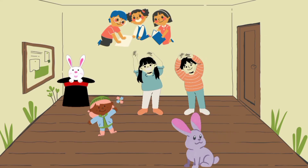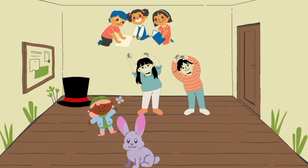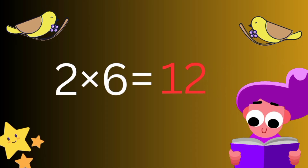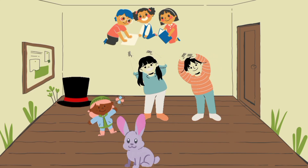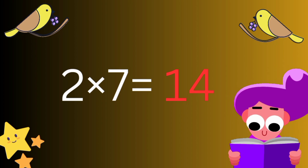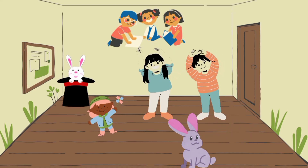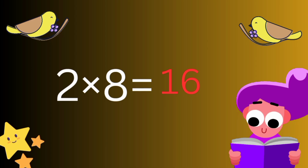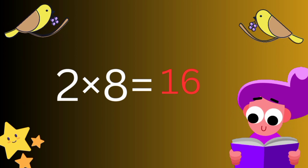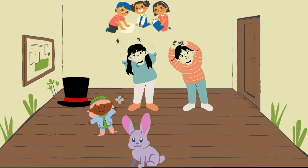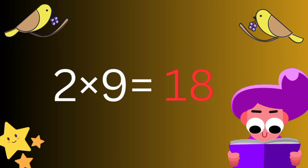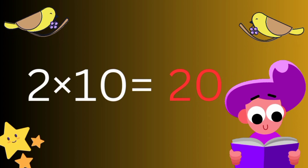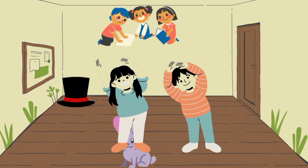Two Fives Are Ten. Two Sixes Are Twelve. Two Sevens Are Fourteen. Two Eights Are Sixteen. Two Nines Are Eighteen. Two Tens Are Twenty.